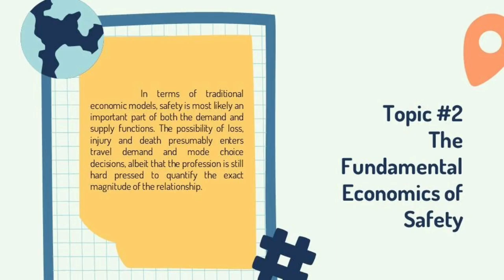Topic 2: The Fundamental Economics of Safety. In terms of traditional economic models, safety is most likely an important part of both the demand and supply functions. The possibility of loss, injury, and death presumably enters travel demand and mode choice decisions, albeit that the profession is still hard-pressed to quantify the exact magnitude of the relationship.